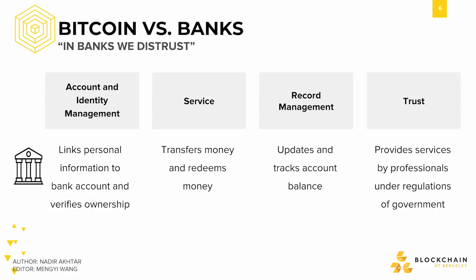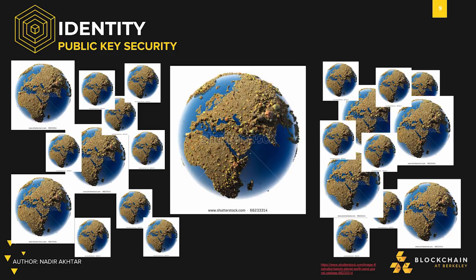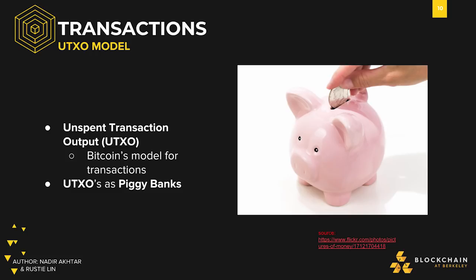We then took you through the goal of Bitcoin, which was to replace the bank, and showed how Bitcoin was able to do that. We first introduced the idea of identity — how identity on the Bitcoin blockchain is split into the public key and the private key, where the public key is what you use to identify yourself to others, and the private key is what you keep for yourself. We showed you how public keys are secure even though you generated them individually, by making an analogy to grains of sand, each with their own earth with their own grains of sand.